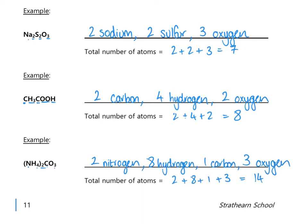If you want more examples, go back to pages 8 and 9 of your booklet and look at the formulas you wrote for ionic compounds — some with brackets and some without — and practise calculating the total number of atoms. This will be important when we look at balancing equations later in the week.